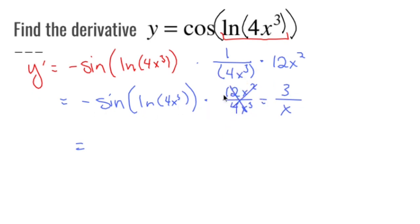Get rid of that and make it that. That looks better. So let me put that together as 3 coming out in front of sine. So negative sine ln of 4x cubed, close it, close it, close it, all over x.